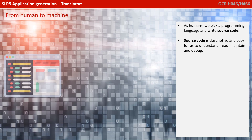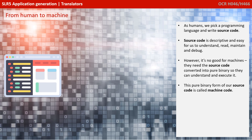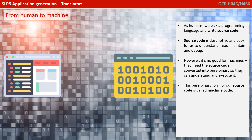As humans, we pick a programming language and we write what we call source code. Source code is descriptive and easy for us to understand, read, maintain, and debug. However, it's no good for machines. They need the source code first converted into pure binary so they can understand and execute it on a processor. This pure binary form of our original source code is known as machine code.